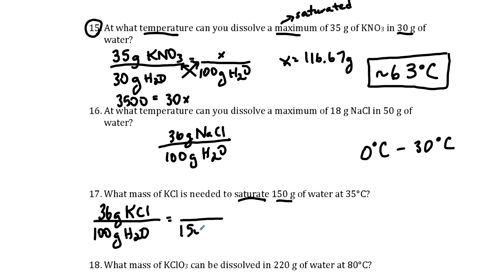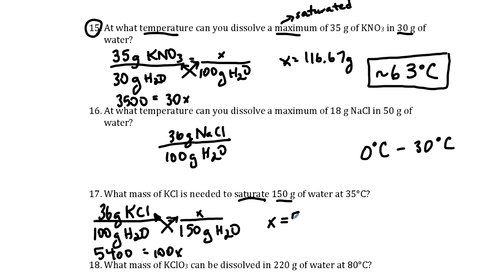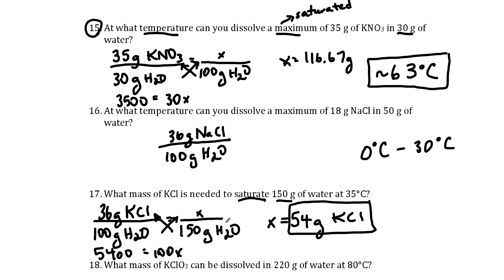So what would be the equivalent fraction if we have 150 grams of water? Cross-multiplying: 150 times 36 equals 5,400, equals 100 times x, then divide both sides by 100 to get 54 grams of KCl — that can dissolve in 150 grams of water at 35 degrees Celsius to make a saturated solution. Questions 18 and 14 would be approached in this exact same way.